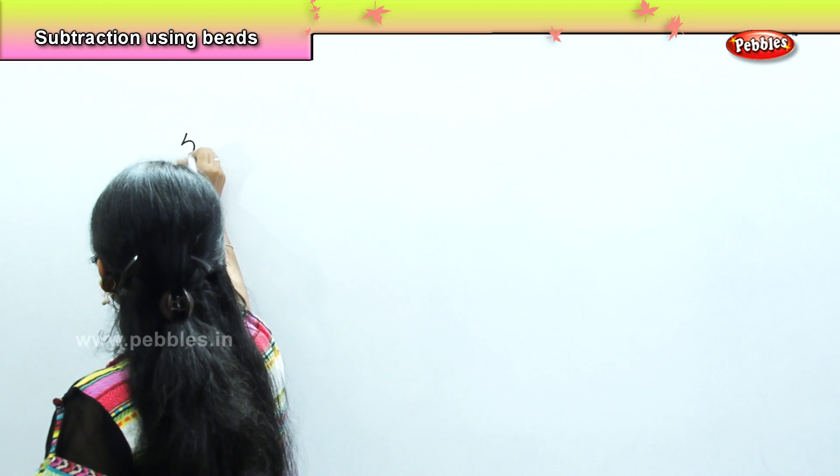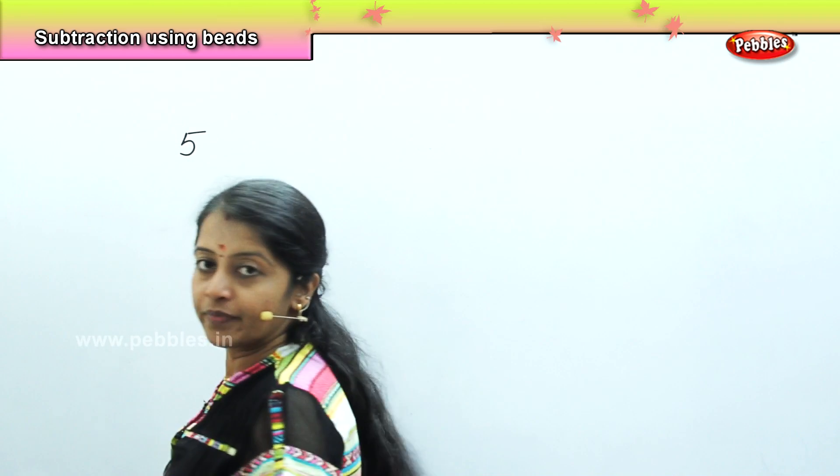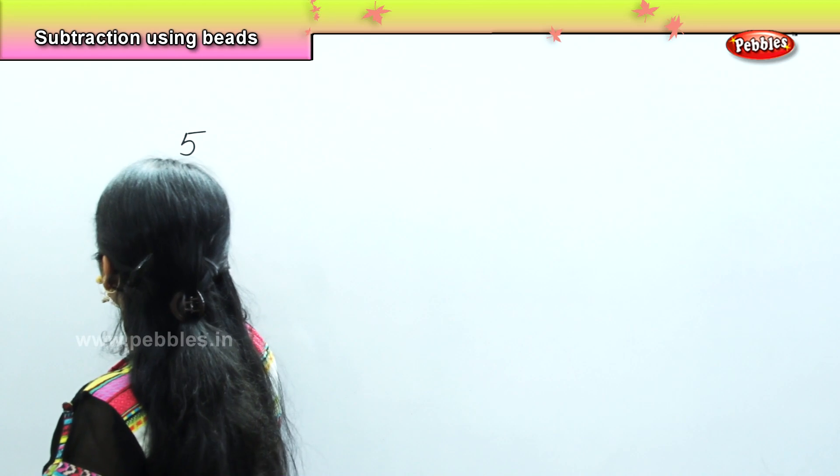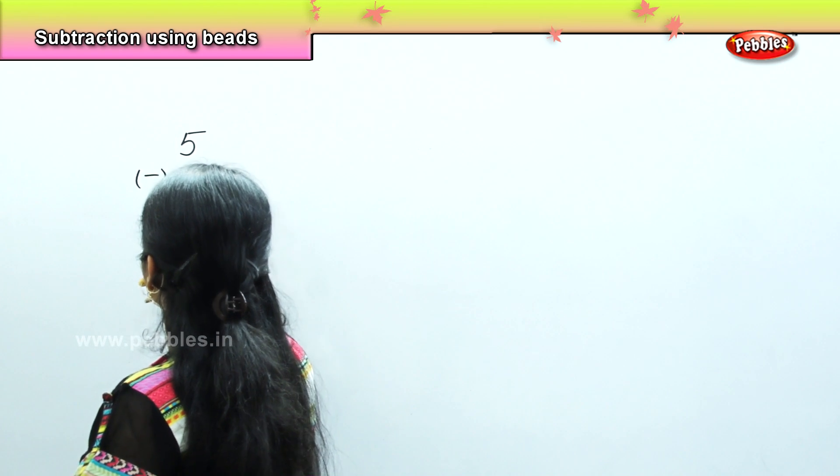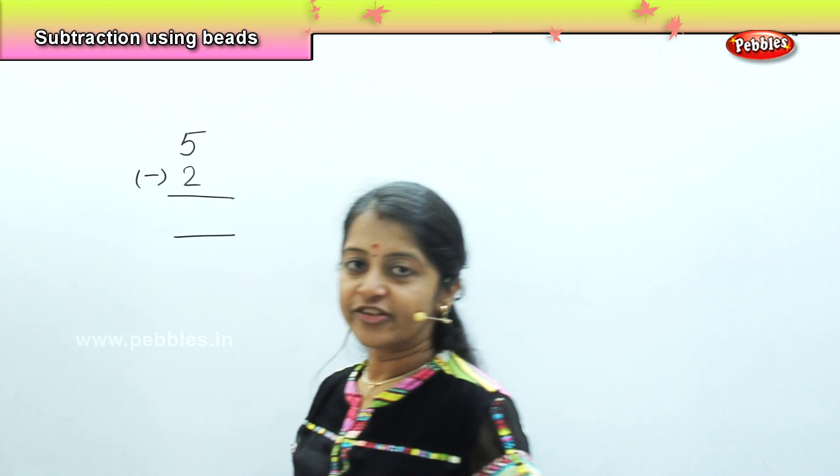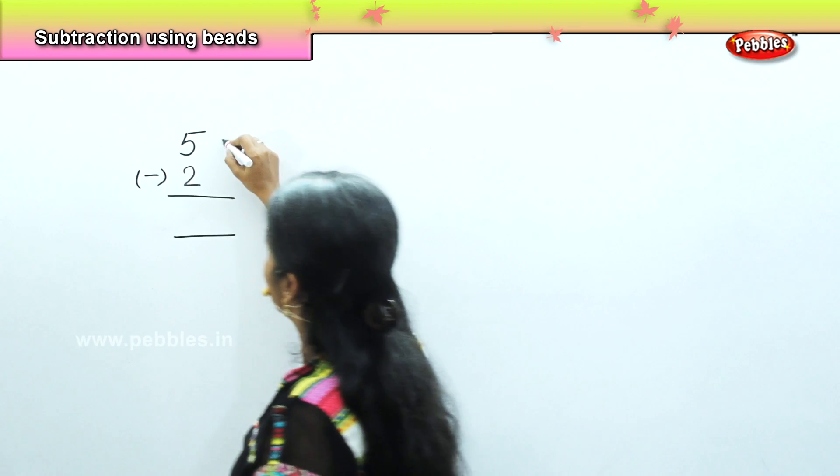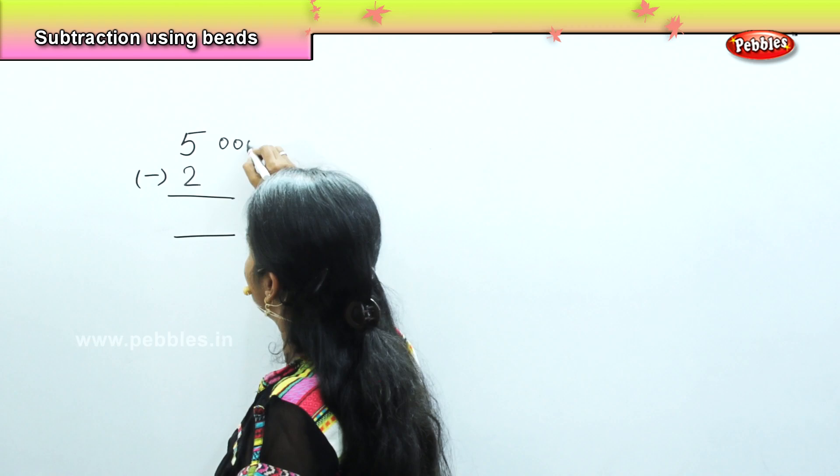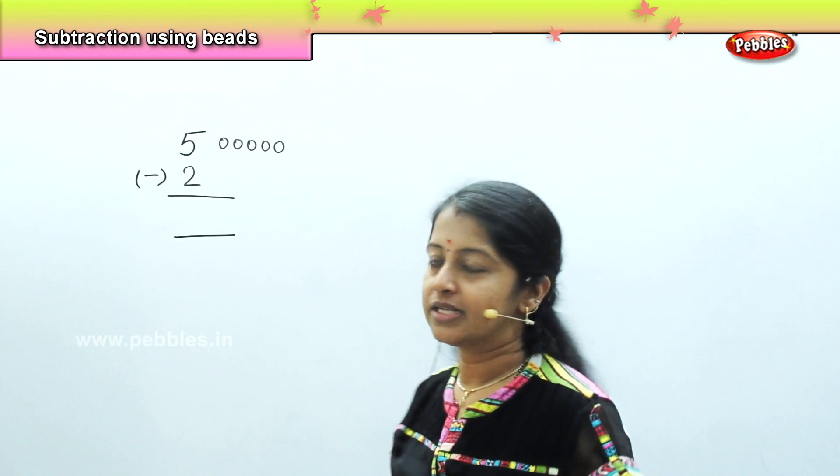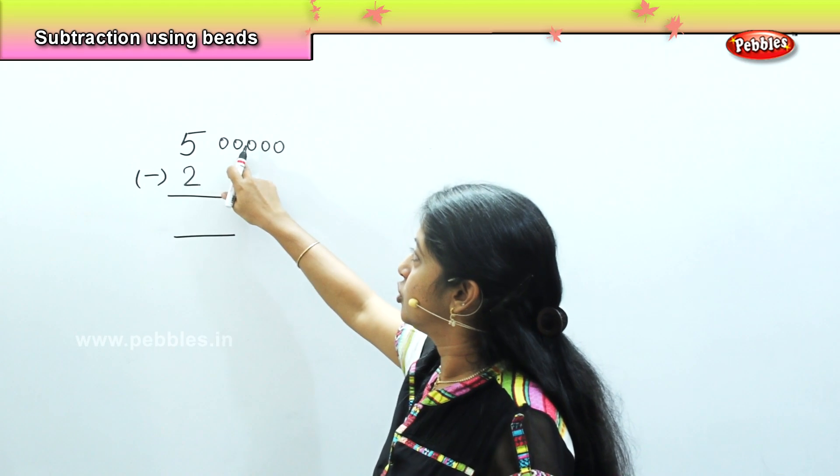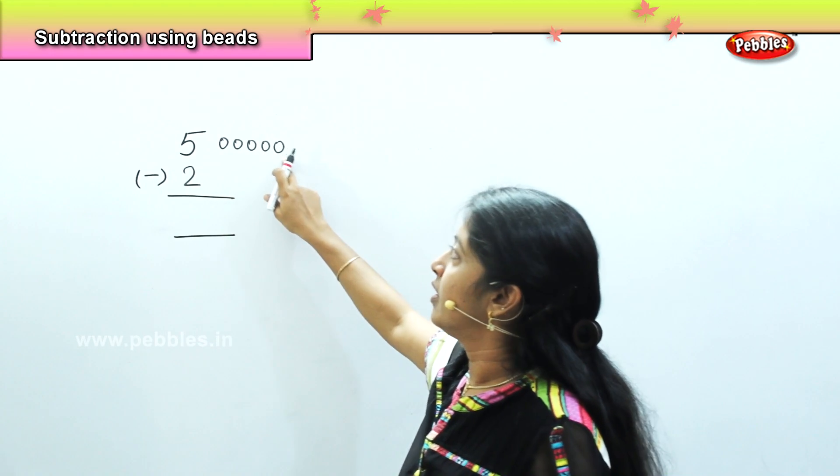What number is this? This is number 5 and I need to subtract 2 from 5. So what is the first step? I will be drawing here 5 beads. Just count and tell whether it is 5: 1, 2, 3, 4, 5.